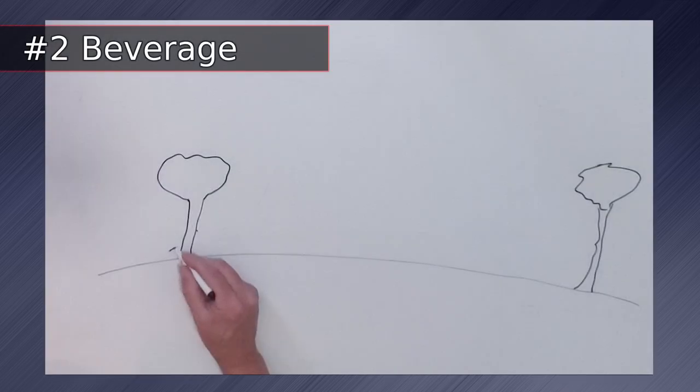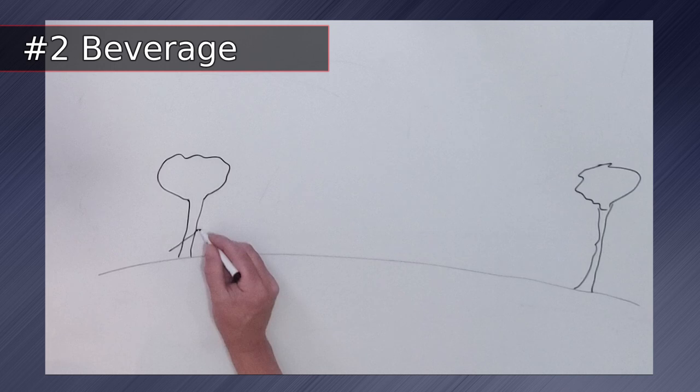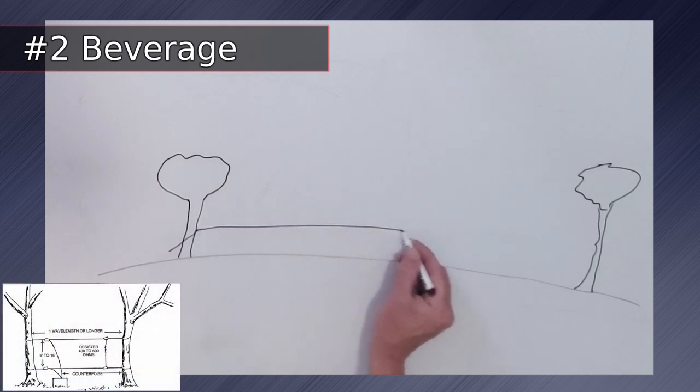Number 2 on the list is the beverage antenna. This is another terminated antenna, but the wire is ran in a straight line.